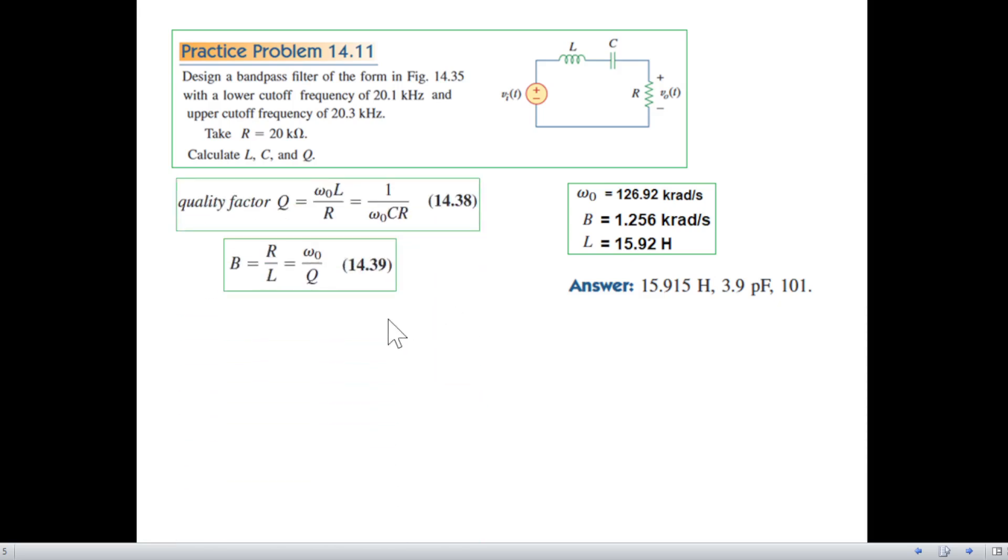Next we will try to find C and Q. So these are the two formulas that we'll be using. Let's find Q first of all. From here we can find Q to be omega naught over B, bandwidth. Both we have found, omega naught and B, so plugging in the values Q is 101.